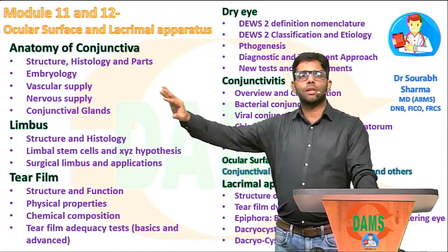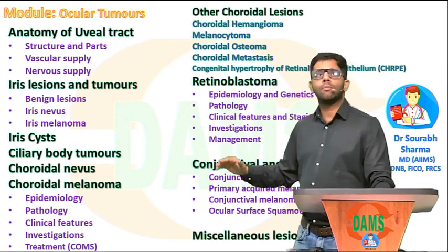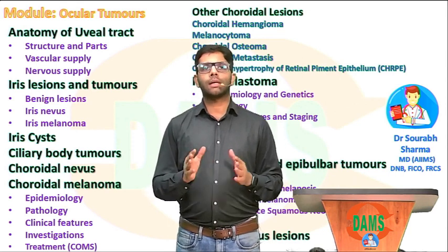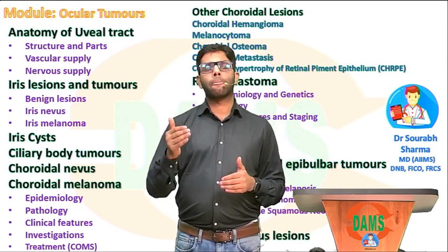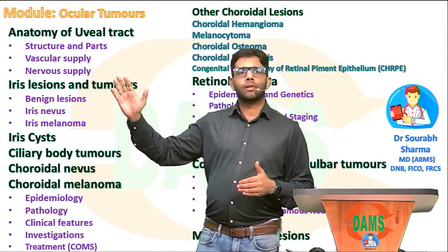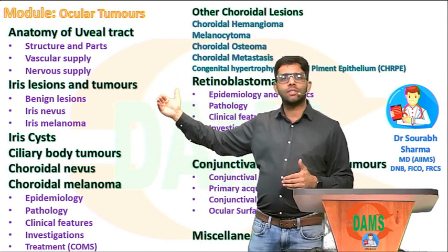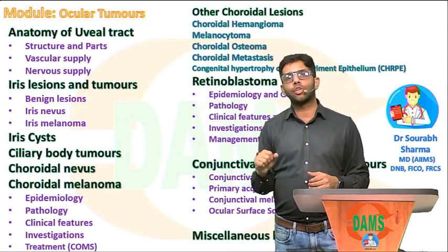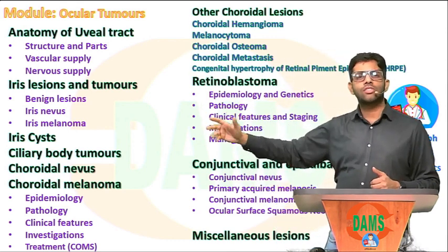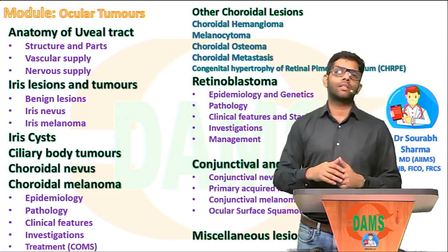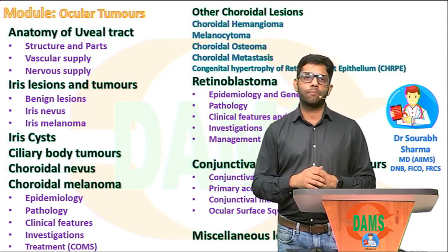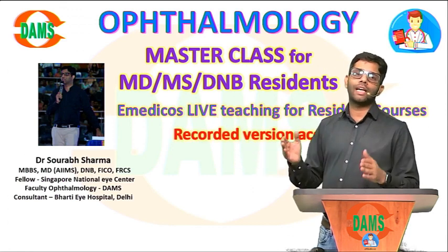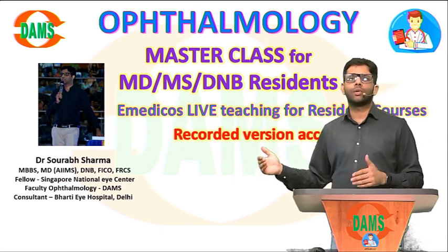Ocular surface was the last topic I covered with lacrimal apparatus, and now I am going to start with tumors in a live session, mostly starting in May. I will update the time. Ocular tumors will start with anatomy of the uveal tract, iris lesions, cysts, ciliary body tumors, choroidal tumors like melanoma, all differential diagnoses of choroidal tumors, then retinal tumors, CHRPE, conjunctival tumors, ocular adnexa session, and some miscellaneous tumors — all covered in the ocular tumors module. It will be live and every live session will also be available in a recorded version, just like previous sessions.